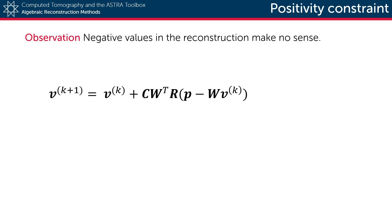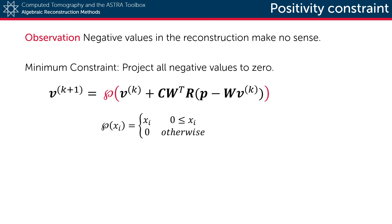The SIRT iterative scheme, however, does not take this into account and negative values can and do typically pop up. An easy solution for this is to project all negative values to zero after each SIRT update. This is of course a very easy operation to perform and can be done very efficiently. Doing so does however break the mathematical guarantee that the reconstruction will converge, but in practice it will result in more accurate reconstructions.